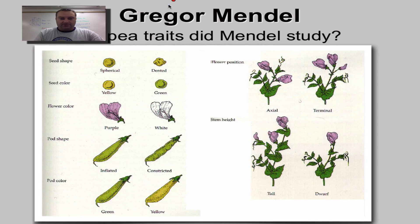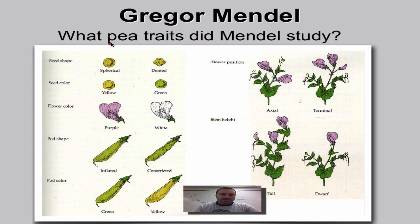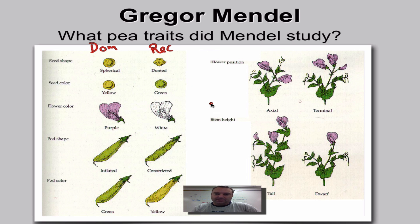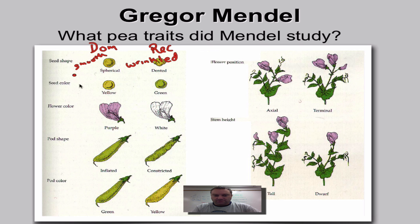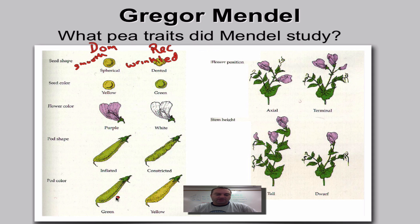Let's look at what Mendel examined. Here are some of the pea traits that he saw. On the left-hand column are the dominant traits, and on the right will be recessive. Seed shape can be smooth or wrinkled. In pea plants, yellow seed color is dominant over green — but just because you're dominant doesn't mean that's the most common allele. Purple flower color is dominant over white. An inflated pod shape is dominant over restricted. Green pods are dominant over yellow.